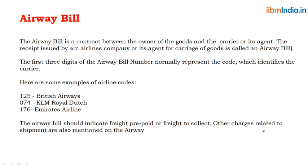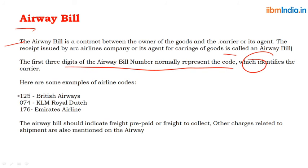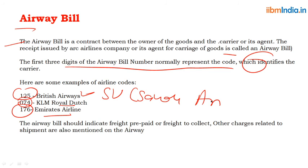The airway bill is a contract between the owner of the goods and the carrier or his agent. It is issued by an airline company or its agent for carriage of goods. The first three digits of the airway bill number normally represent the code identifying the carrier — for example, 125 for British Airways, 074 for KLM Royal Dutch Airlines, 176 for Emirates, and so on. The airway bill should indicate whether freight is prepaid or to be collected, and other charges related to the shipment are also mentioned.